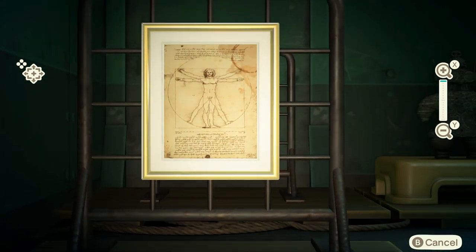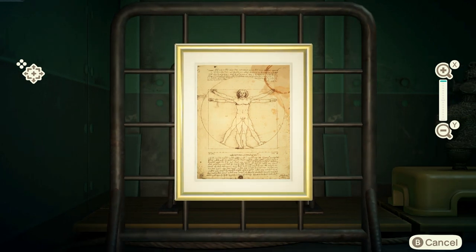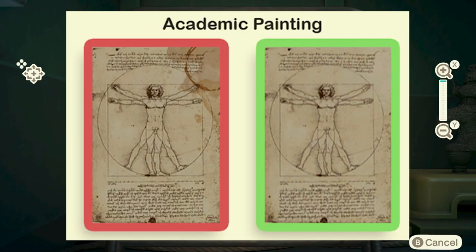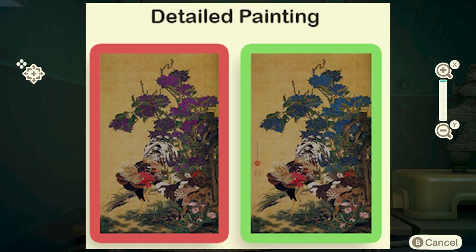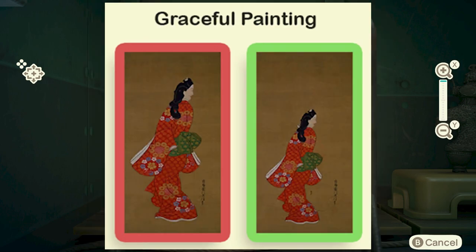Now let's look at all of the other fake paintings. Starting with the academic painting: the fake one is the one with the coffee stain; the real one does not have a coffee stain at all. In the detailed painting, the fake one has purple flowers where the real one has blue flowers in the background. Looking at the graceful painting, the figure or portrait is a lot larger in the fake one, and the person in the real one is a lot smaller.